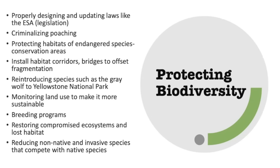The final part of this unit review covers methods that can be used for protecting biodiversity. One of the most important things is to have strong legislation in a country to protect species, such as the Endangered Species Act. You can criminalize poaching to help discourage it, protect habitat of species, and install habitat corridors which allow species to travel from one fragmented area to another divided by neighborhoods and roadways. Reintroduction is sometimes part of the plan — one example is the reintroduction of gray wolves into Yellowstone National Park. We would also want to monitor land use for sustainability, institute breeding programs through zoos, restore compromised ecosystems and lost habitats, and reduce non-native and invasive species which often compete with specialist species.